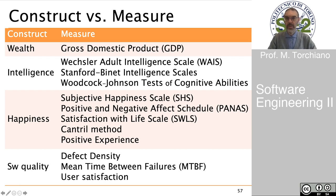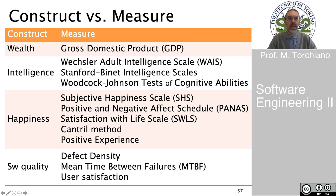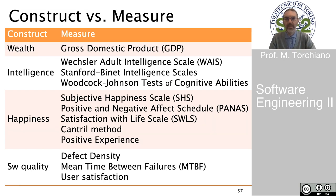Software quality is another concept that is extremely vague — it is multi-dimensional and difficult to characterize. For instance, we can have defect density, mean time between failures, or user satisfaction. These are specific measures that can be used to actually quantify a construct that is, by its own definition, something vague.